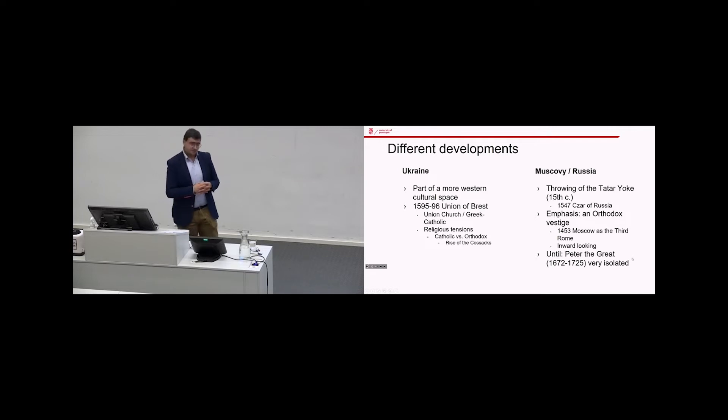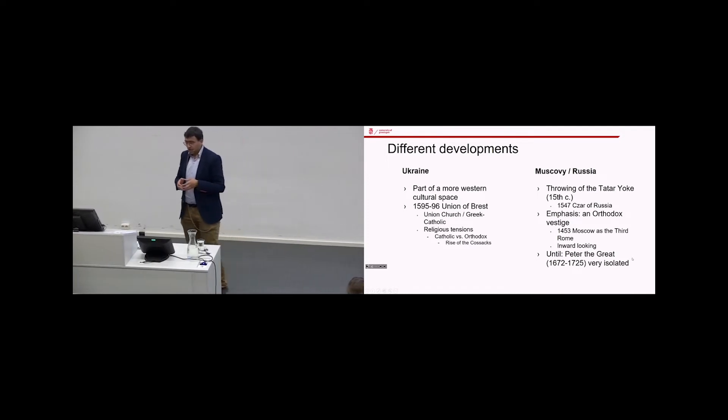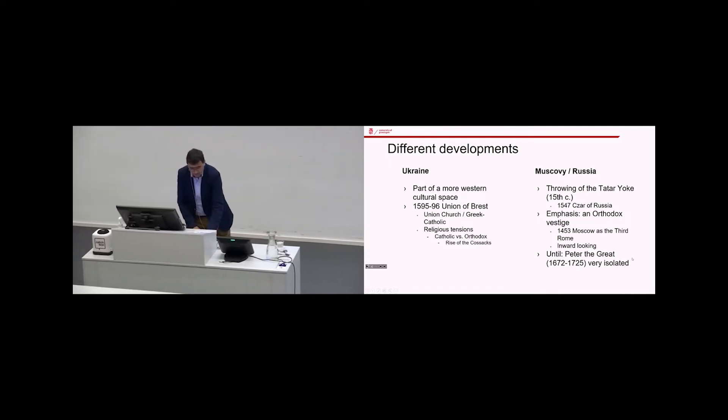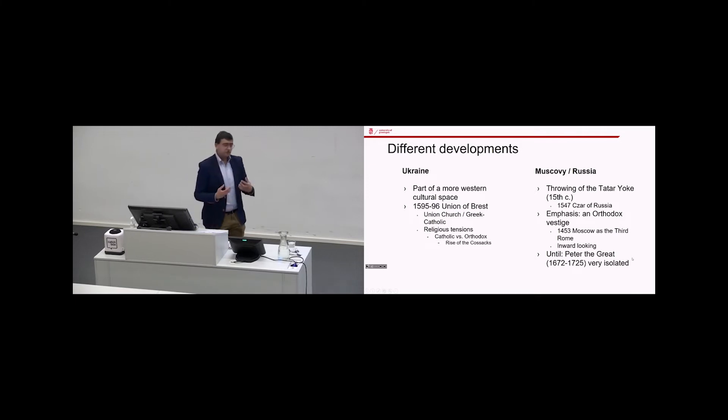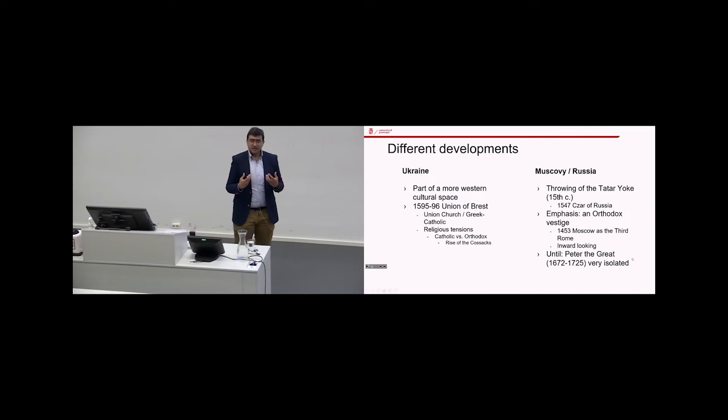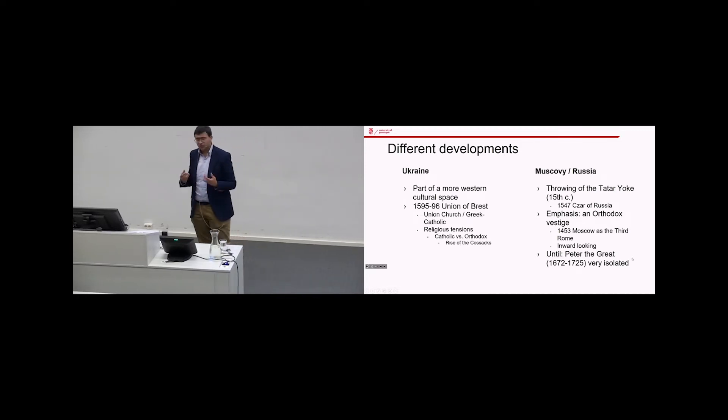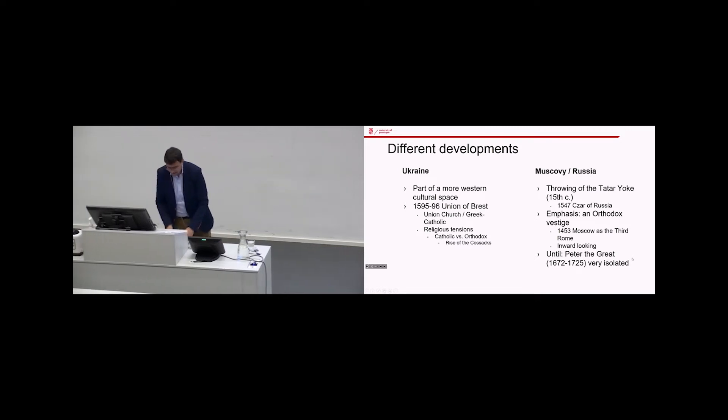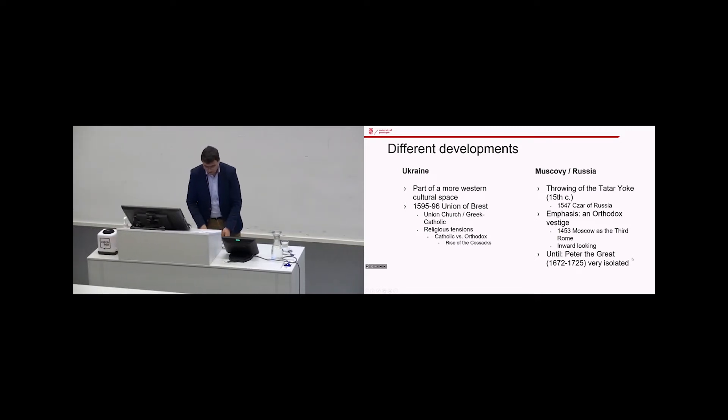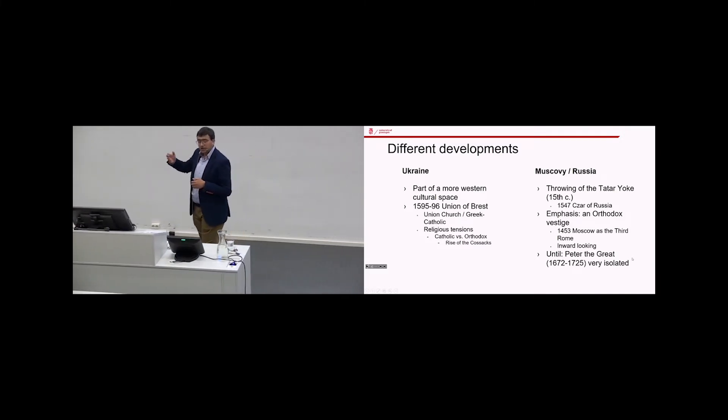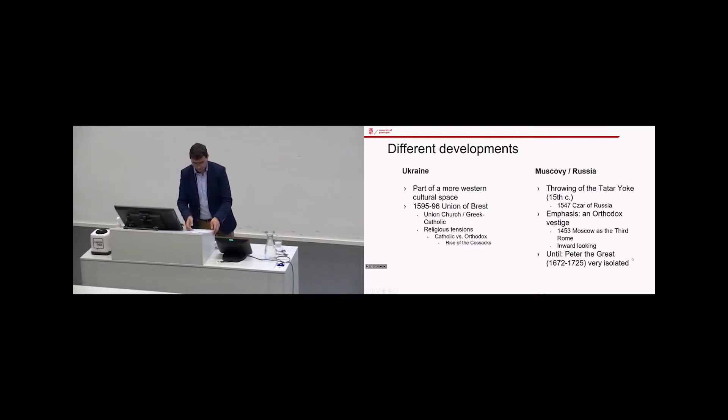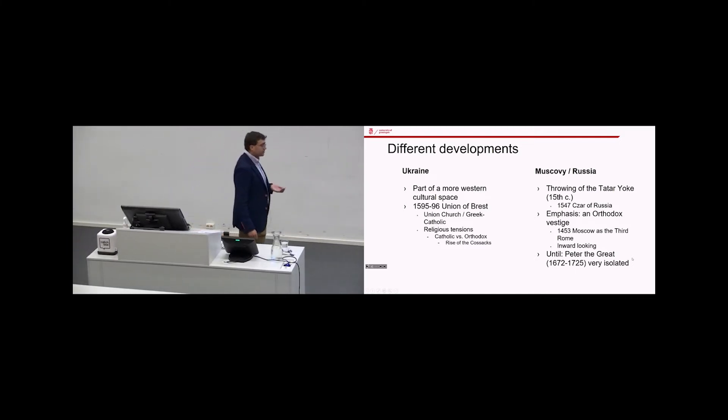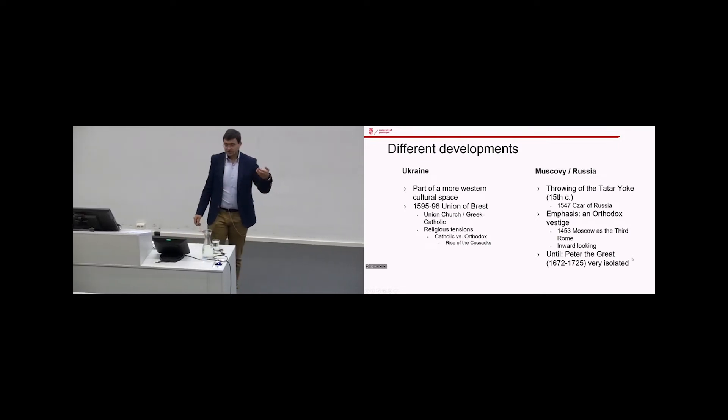So what you see is that what is today Ukraine and what is today Russia, they have the same kinds of roots, but from those roots they developed in very different ways. So in the west where we can find Ukraine today, that becomes part of a much more western cultural space with western Christianity. There even forms in the 16th century a special Ukrainian or Ruthenian form of Christianity, the Union Church, a church which uses the Byzantine liturgy but recognizes that the Pope, the Bishop of Rome, is the head of the church.